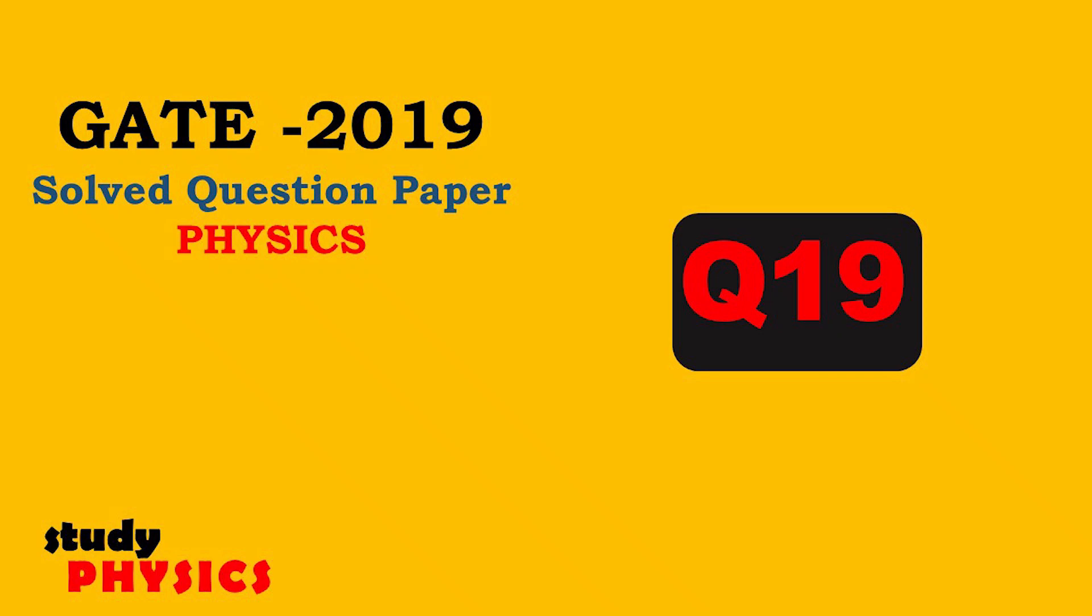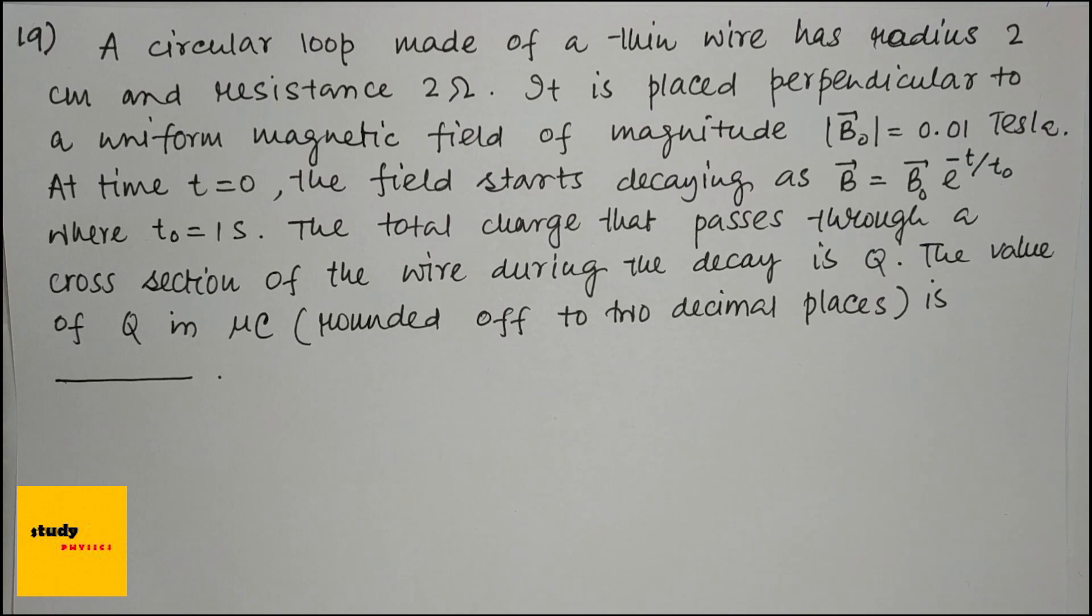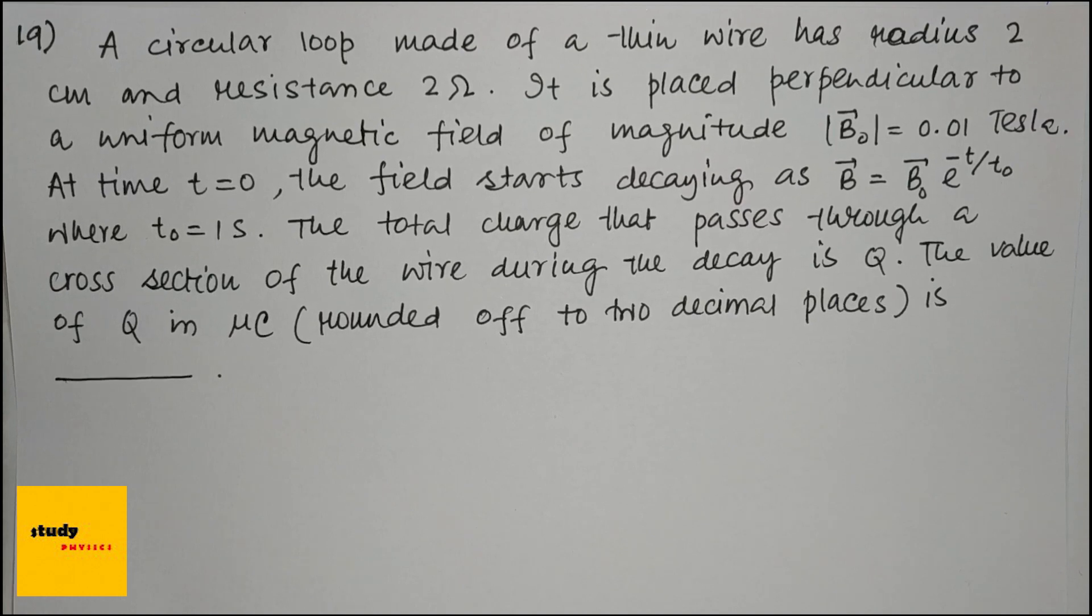Hi everyone, welcome to Study Physics. Here's question number 19: A circular loop made of a thin wire has radius 2 cm and resistance 2 ohm. It is placed perpendicular to a uniform magnetic field of magnitude B₀ = 0.01 Tesla. At time t = 0, the field starts decaying as B = B₀e^(-t/t₀), where t₀ is 1 second. The total charge that passes through a cross-section of the wire during the decay is q. The value of q in micro coulombs.